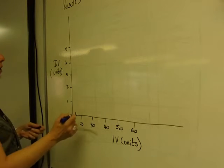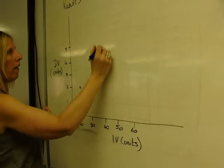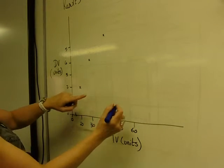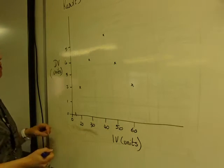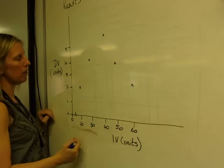So then I plot my points. And I make sure that I plot them accurately. 1, 2, 3, 4, 5. So I plot them with an X, not a plus sign because it's easy to read. And I use a sharp pencil.